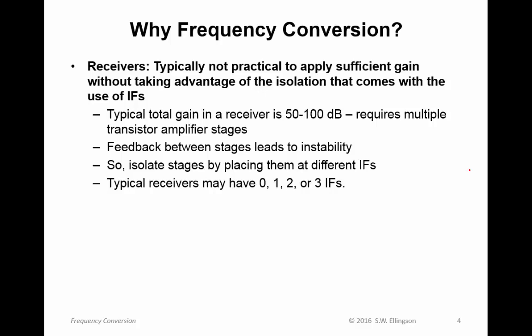What do I mean by that? The total gain in a receiver is typically somewhere in the ballpark of 50 to 100 dB — that's what it takes to get the signal from the level at which it's received to a level at which we can successfully digitize or demodulate it. A single amplifier stage is usually between 10 and 15 dB, so we need a string of amplifiers. With a string of amplifiers consisting of many transistors, we have increased possibility of feedback — signals going from one stage back to another, or all the way back to the beginning. We know this because of the difficulty keeping RF out of the power supply in amplifier design.